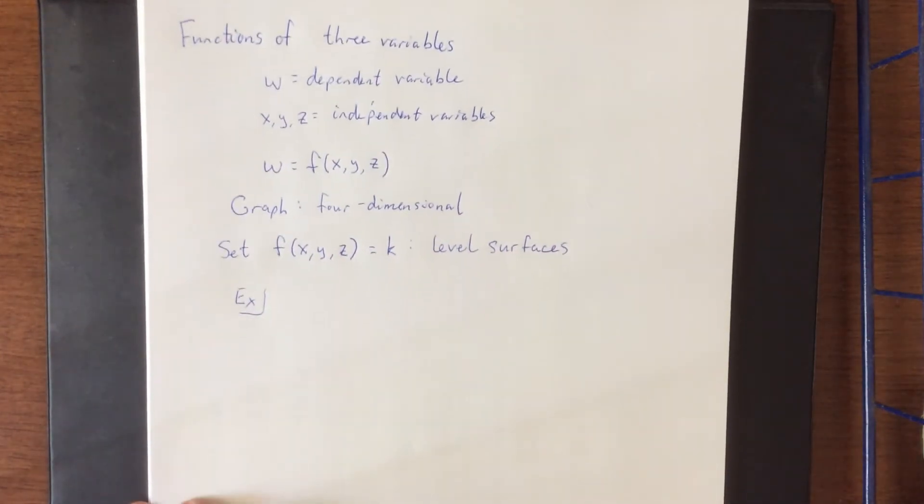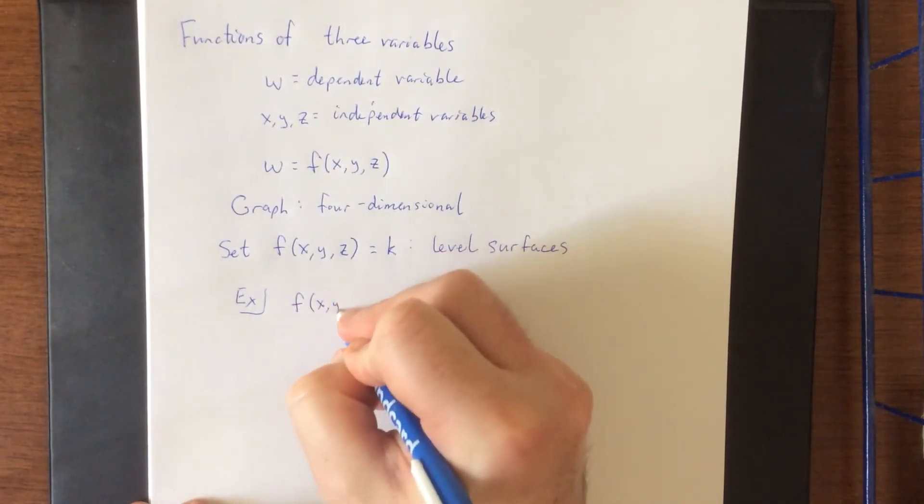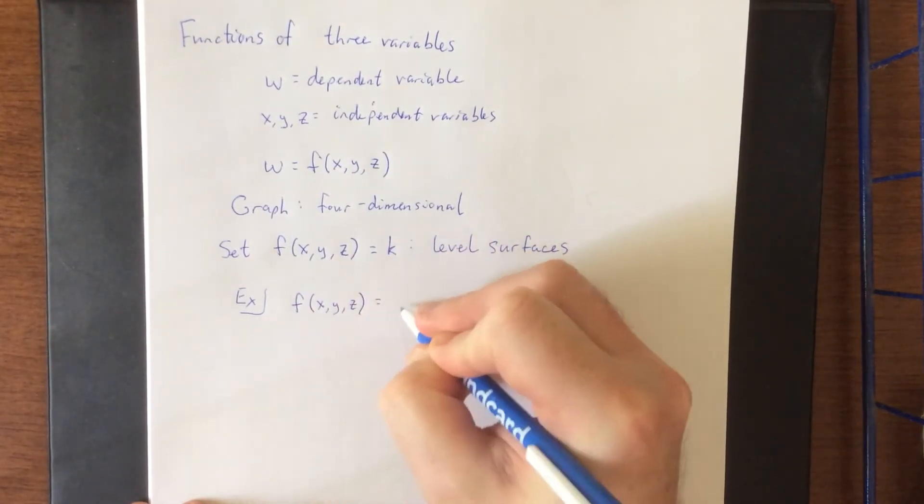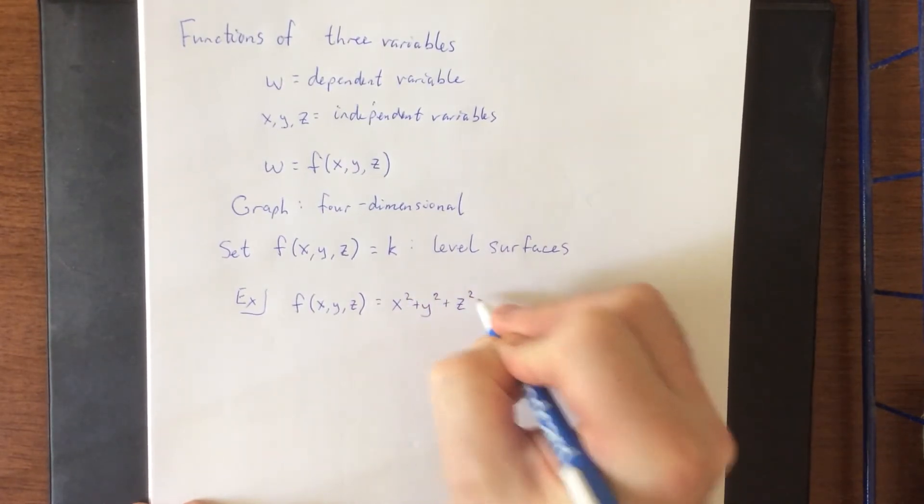Now, sketching these becomes exceptionally difficult. So what I'm going to do is just give you an example of what something like this might look like. So x squared plus y squared plus z squared. Here's a rather basic function of three variables.